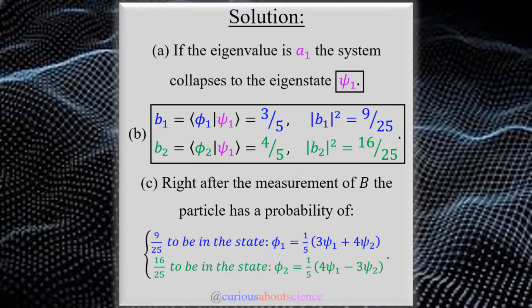Alrighty, so for our solution then, in part A, if the eigenvalue is A1, then we know that the act of the measurement on the system collapsed the wave function to eigenstate psi 1. That's what we can guarantee if we know what state it's in.